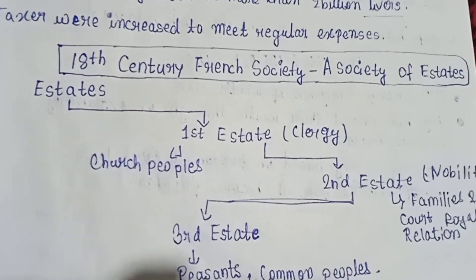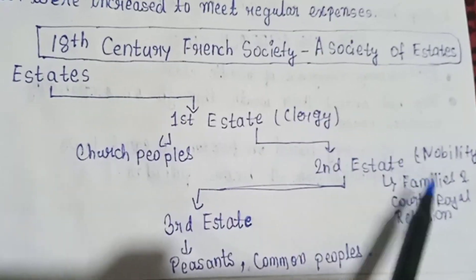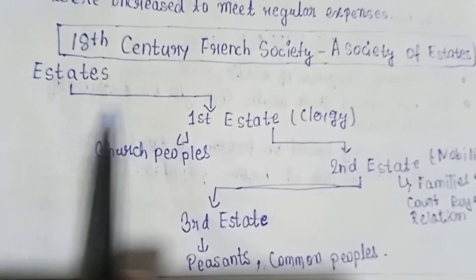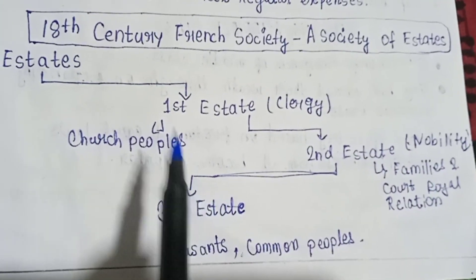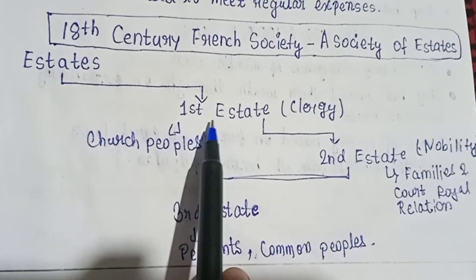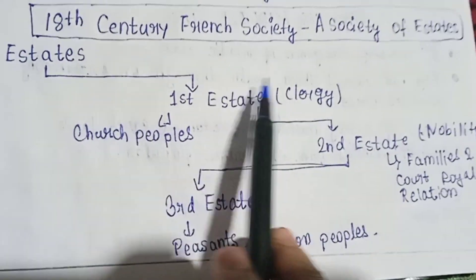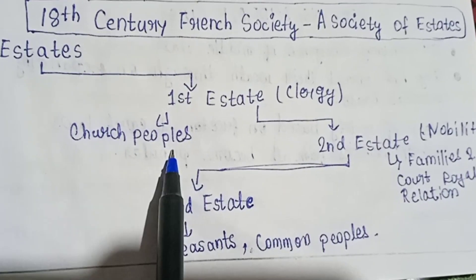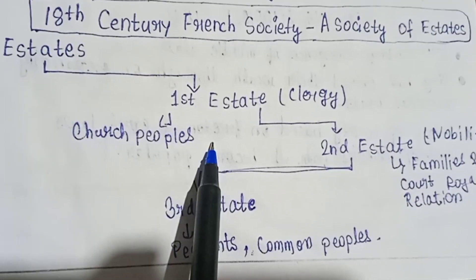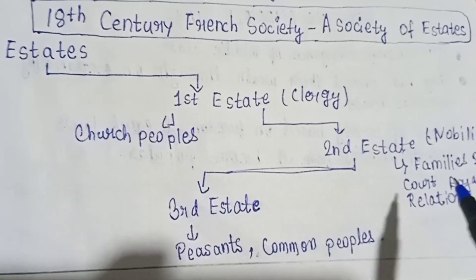In the 18th century, there were three estates in French society: the First Estate, the Second Estate, and the Third Estate. The First Estate was the clergy — church people, like popes — what is called the clerical class. In French society, church people were among the wealthy.